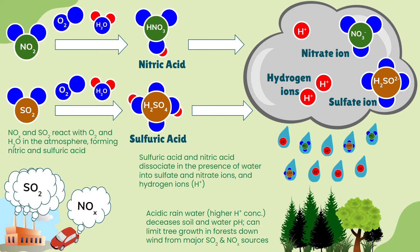The pH scale measures the concentration of H+ ions. A lower pH means a more acidic environment, which is actually an increase in H+ ion concentration. This forest will now receive water droplets with all these H+ ions, resulting in the soil becoming more acidic. Water sources also become more acidic, and that has consequences for plant growth and aquatic life — which we'll spend the rest of the video focusing on.